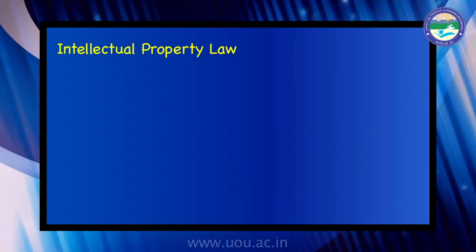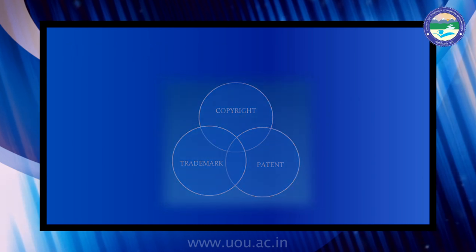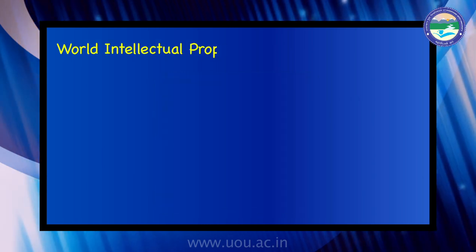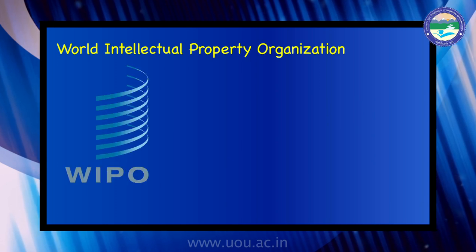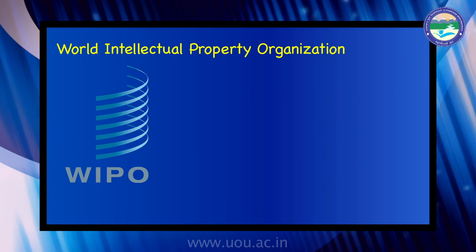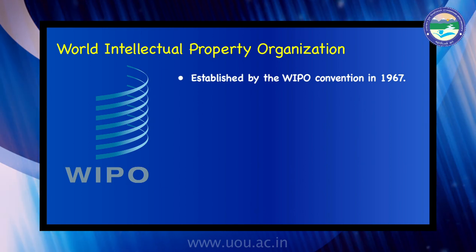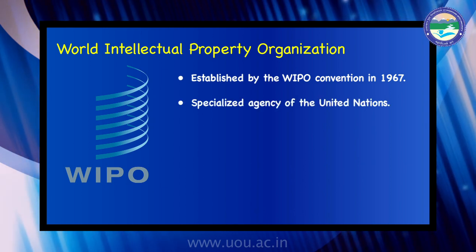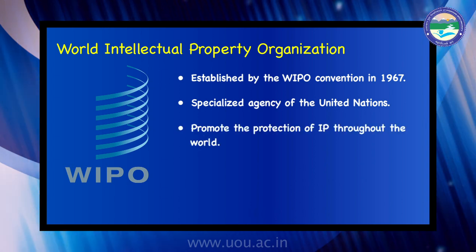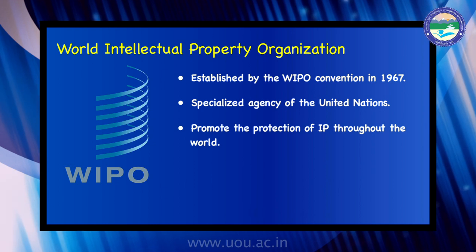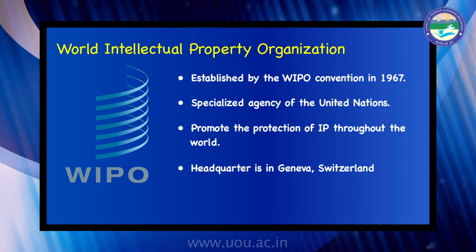Let us start with understanding the meaning and types of intellectual property rights. For intellectual property rights across the world, there is WIPO — the World Intellectual Property Organization — established by the WIPO Convention in 1967. This organization is a specialized agency of the United Nations that promotes the protection of intellectual property throughout the world. Its headquarters is in Geneva, Switzerland.